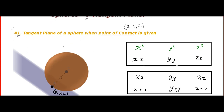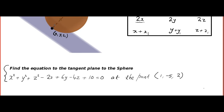To write the equation of a tangent plane when the point of contact is given, you convert x squared into x times x1, y into y1, z into z1. And 2x will be written as x plus x1, and similarly for y1 and z1. Now here we go — the trick is very simple. Suppose we have a sphere: x² + y² + z² + 2ux + 2vy + 2wz + d = 0.